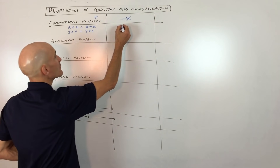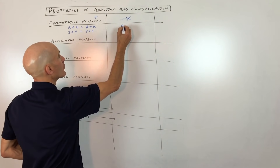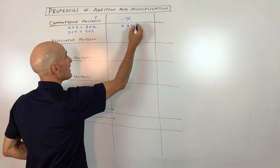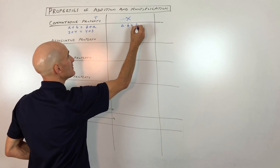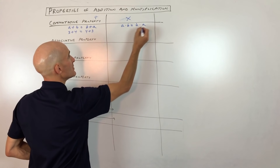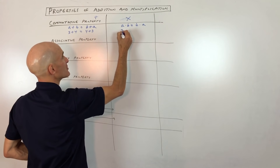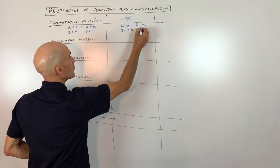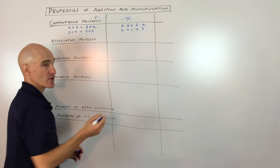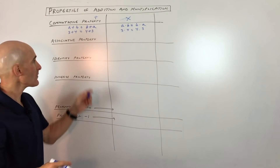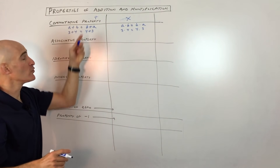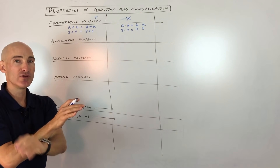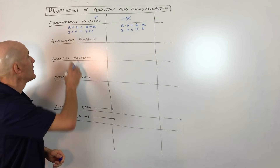3 plus 4 is 7, and 4 plus 3 is 7 — they're equal. It's the same thing for multiplication. The property is written like this: A times B equals B times A. Or you could say 3 times 4 equals 4 times 3 — 12 equals 12. So commute — think about moving. Commutative property.